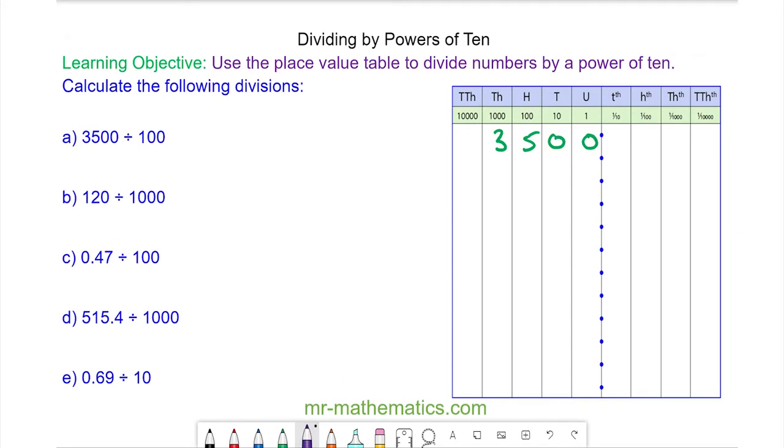Because we're dividing, we're moving every number to the right two times because there are two zeros in 100. Zero units moves to the hundredths. The zero tens moves to the tenths. The five hundreds moves to the units. And the three thousands moves to the tens. So 3,500 divided by 100 is 35.